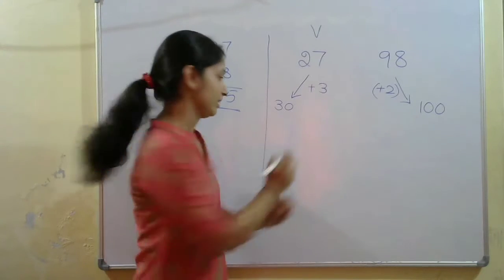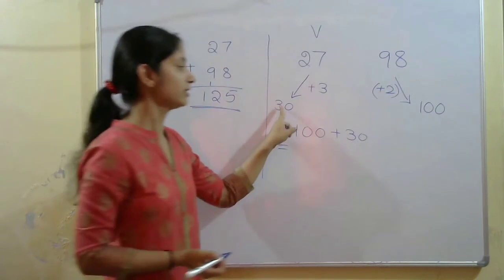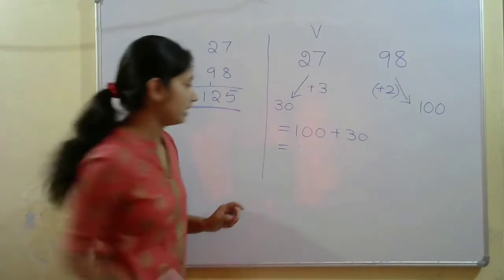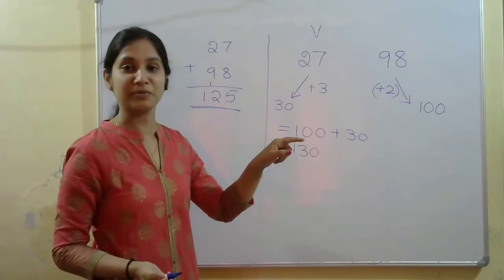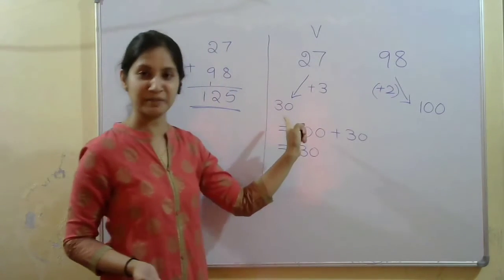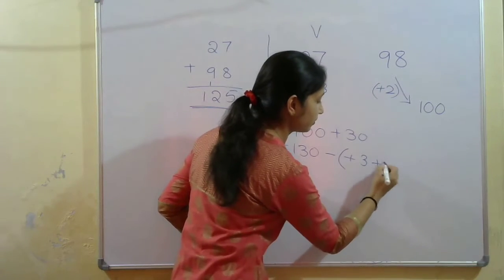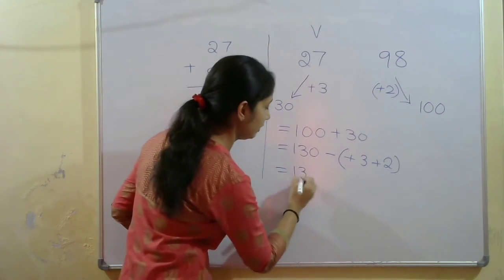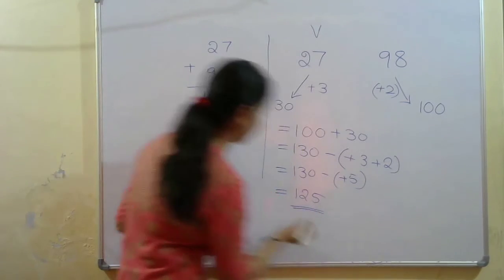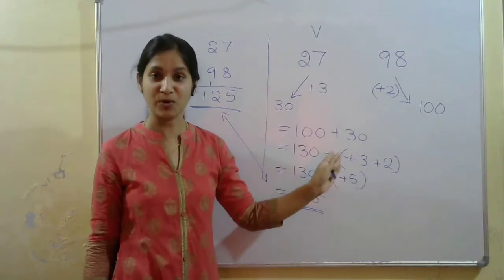Now it is very easy to add these two multiples of 10. Adding 100 and 30 gives us 130, but this is not our final answer. Since we added 3 and 2 to the original numbers to get those multiples of 10, we need to subtract. So 130 minus 5 gives us 125. You can compare the answers — they match!